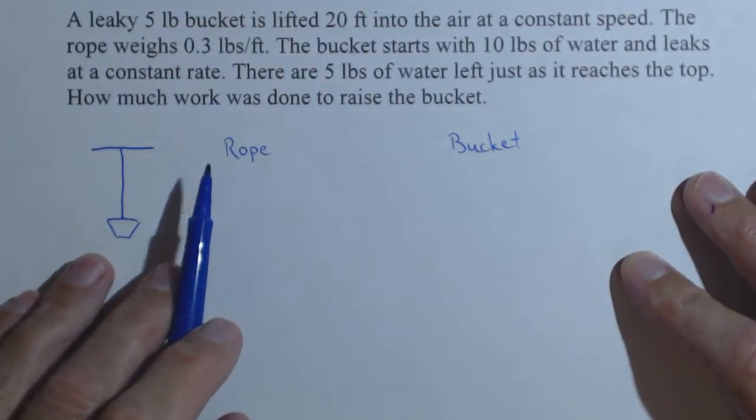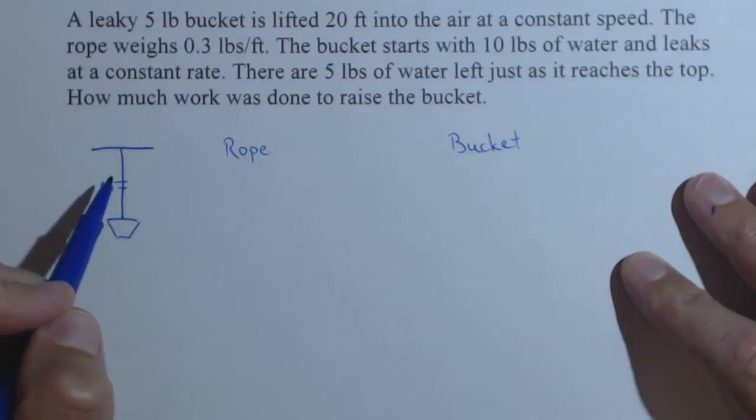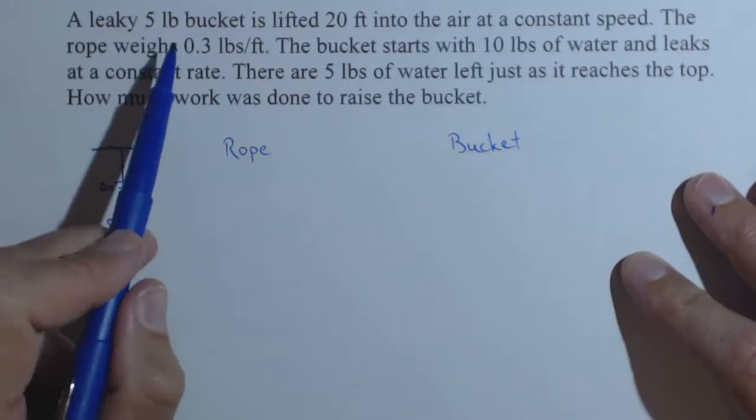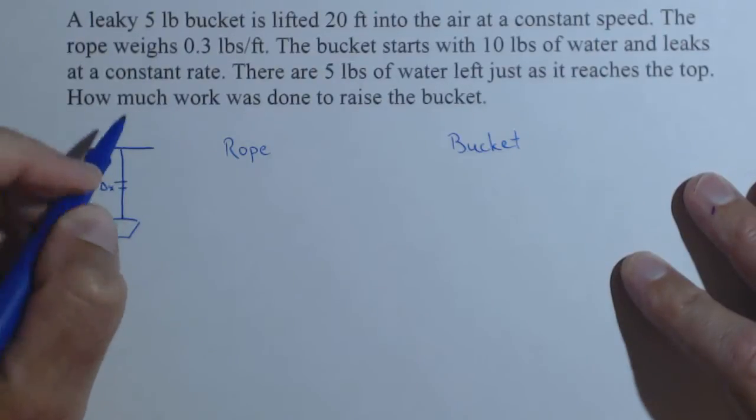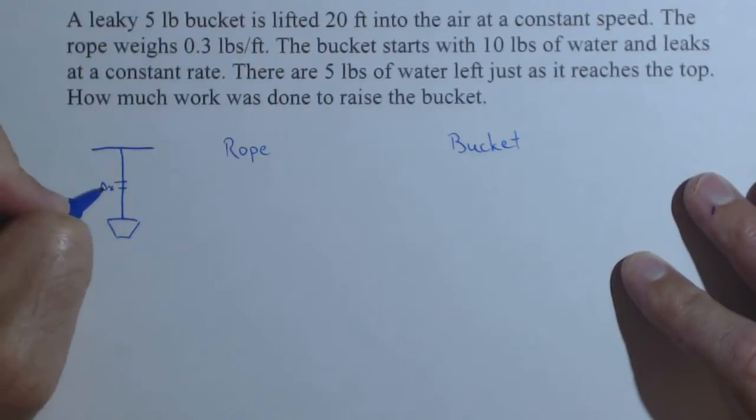So the rope, let's take a slice of the rope. You do not have to do this, it's just one way. So that slice is delta x and I know that the force on that rope is going to be 0.3 pounds per foot times the delta x.